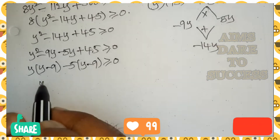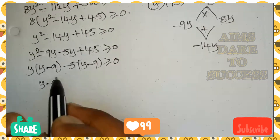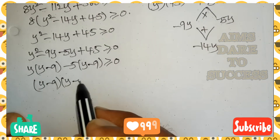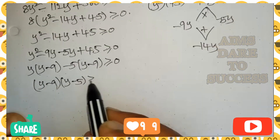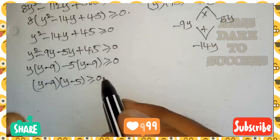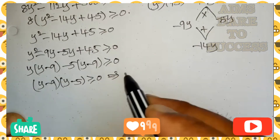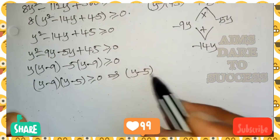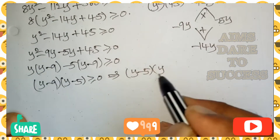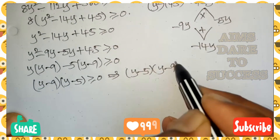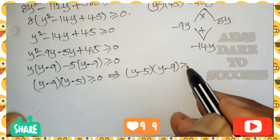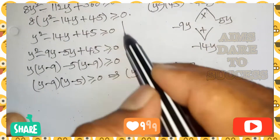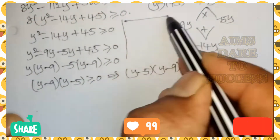From both brackets, taking (y − 9) common: remaining value is (y − 5). So (y − 9)(y − 5) ≥ 0, which can be written with the smaller number first: (y − 5)(y − 9) ≥ 0.